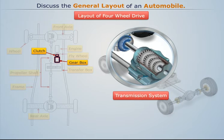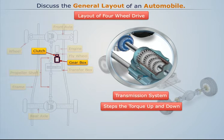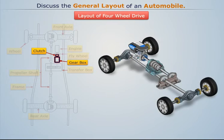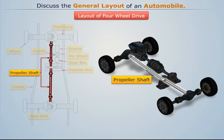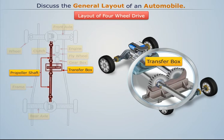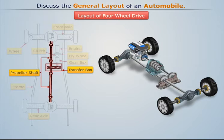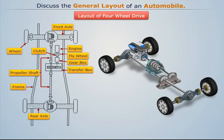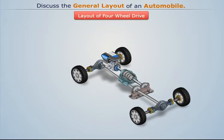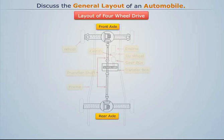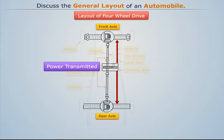The transmission system can step the torque up or down as per our requirement. This torque is then sent to both propeller shafts using a transfer box. The propeller shaft then passes the torque to the driving or live axles, which rotate the wheels to move the vehicle on the road.